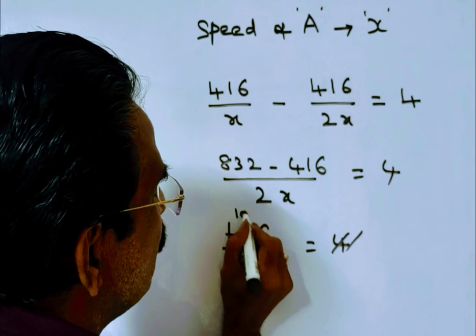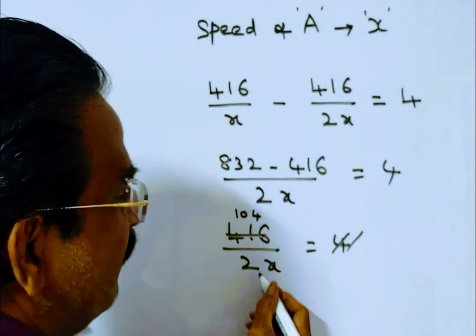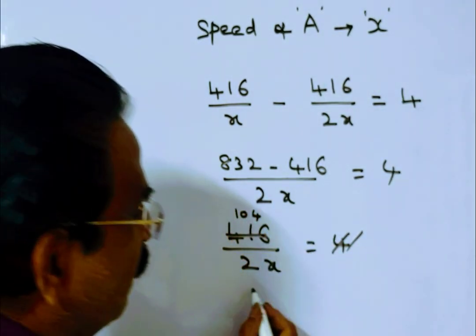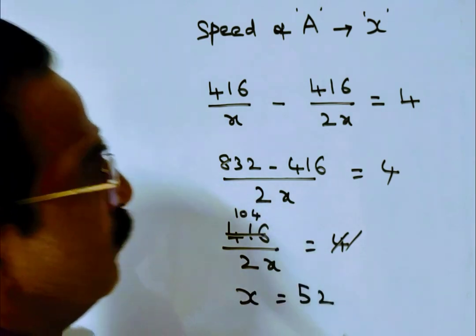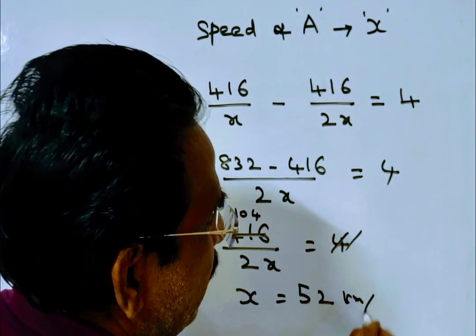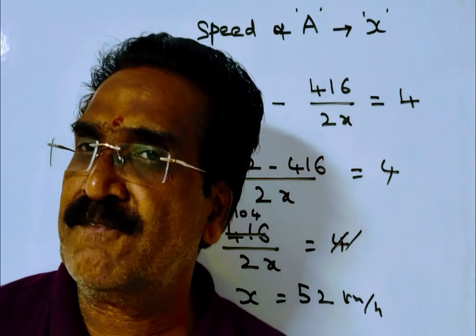Friends, 2x equals 104, X equals 52 kph. This is the speed of train A.